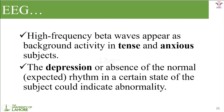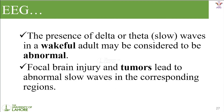If a person is awake and showing theta waveforms due to depression, it means his state of mind is not good — he is abnormal. The presence of delta or theta waveforms in a wakeful adult may be considered abnormal. Delta and theta waveforms are also known as slow waveforms of the EEG. Focal brain injury and tumors lead to abnormal slow waves in the corresponding region. So if a person shows delta or theta waveforms while awake, it may indicate a brain injury or tumor.